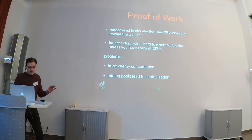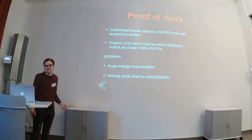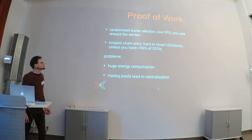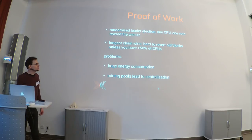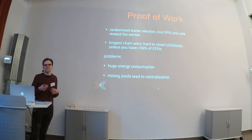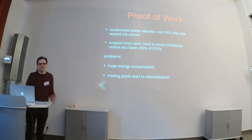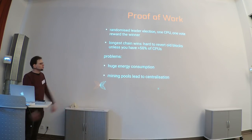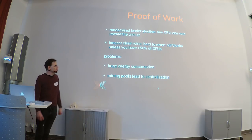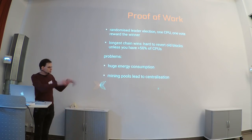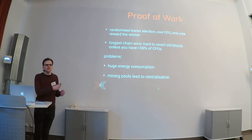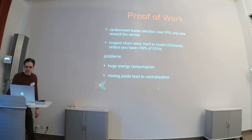The useless work of finding the right hash is not ideal, so several alternatives have been proposed. One is proof of useful work — instead of hashing, do something like searching for extraterrestrial intelligence or gravitational waves. There's also proof of storage, where you give away disk space to get elected more often. But the approach to be discussed is proof of stake.